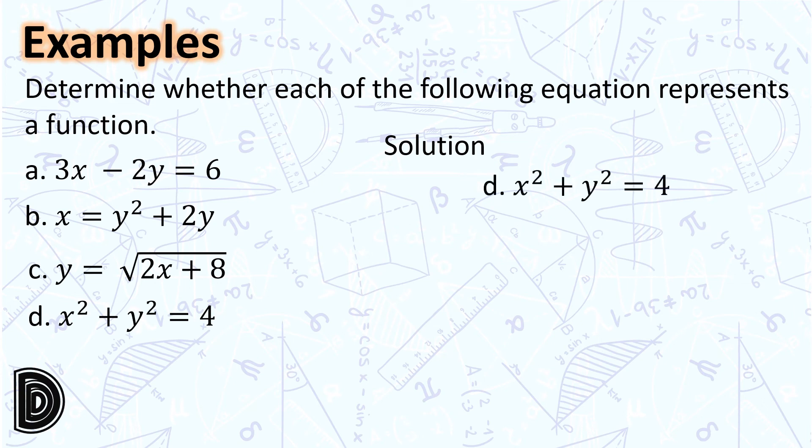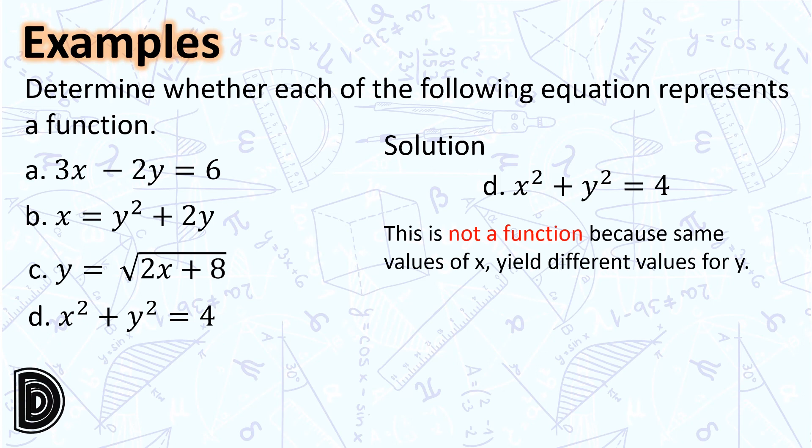Letter d: x² + y² = 4. This is not a function because the same values of x yield different values for y. For example, when x = 1, we get y = ±√3. Written as a set, the relation will have elements (1, √3) and (1, −√3). Hence, this is not a function.